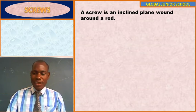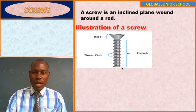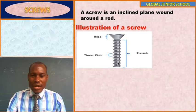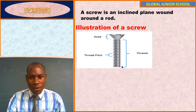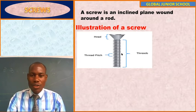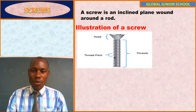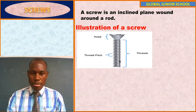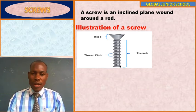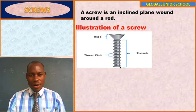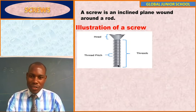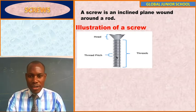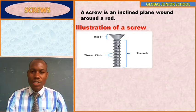What do we mean by that? This is what a screw looks like exactly. It contains an inclined plane that is wound around a rod. There is a rod here which is stiff, and around it there is an inclined plane wound around it. That inclined plane wound around a rod is called a screw. It is almost like a winding rod — it winds around, and that's why we call it an inclined plane.